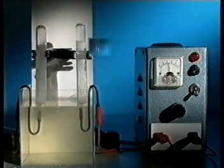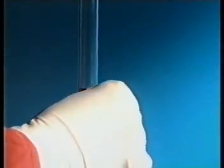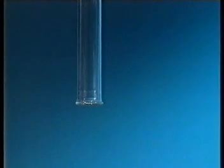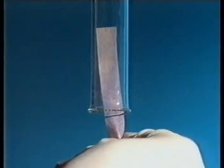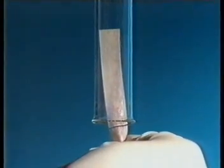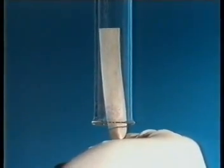The gas collecting at the positive electrode is tested with damp blue litmus paper. It goes red and quickly bleaches white. The gas is chlorine.